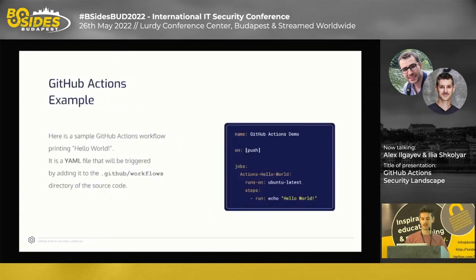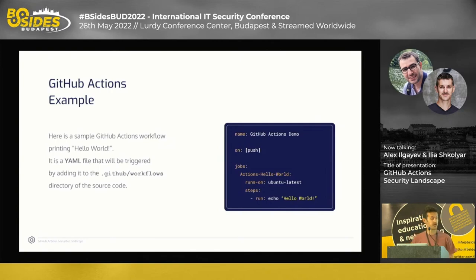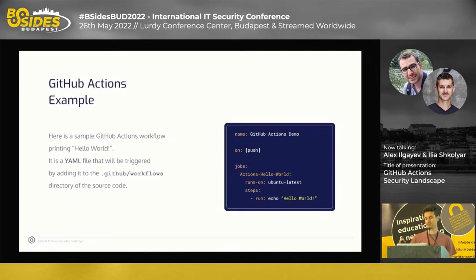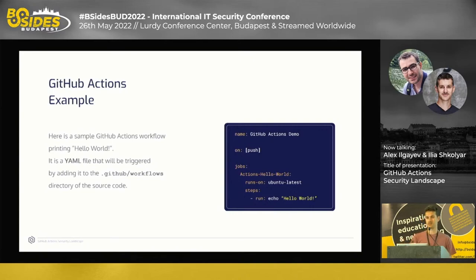Here's an example of a GitHub Action. It is just a YAML file that contains when and what to run. You can see the 'on' keyword, which means this action runs upon every push to the repository. It contains a single job and a single step just to print hello world. To create this workflow, you simply put this code inside .github/workflows and that's it — every next push will trigger that workflow.